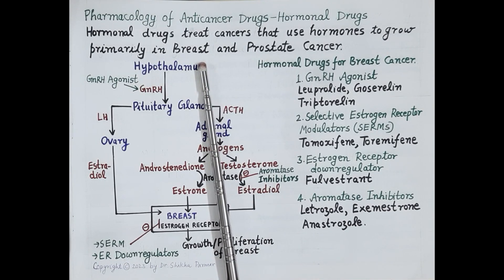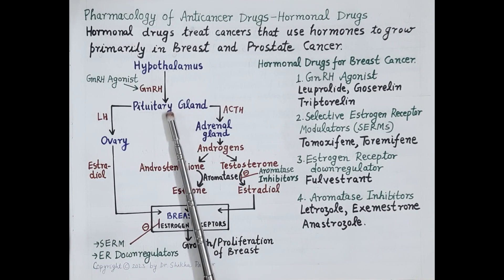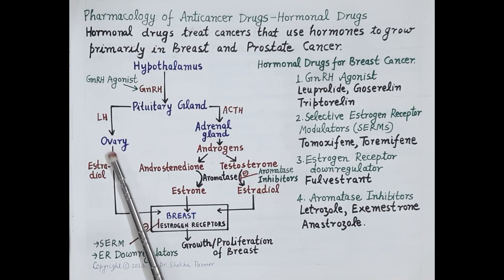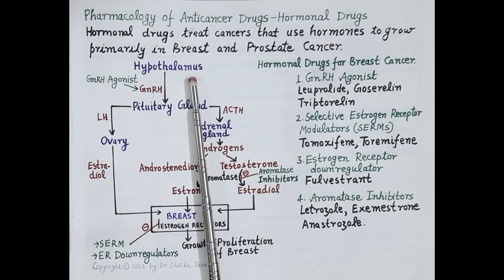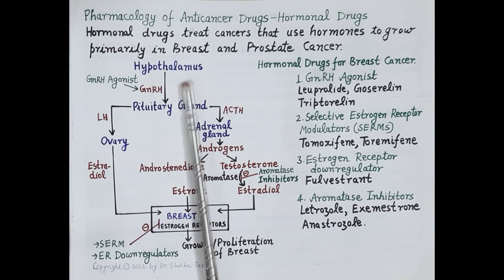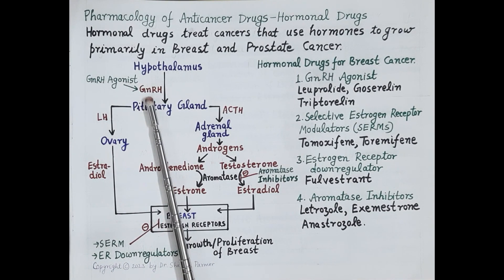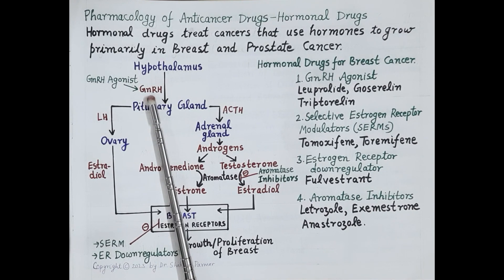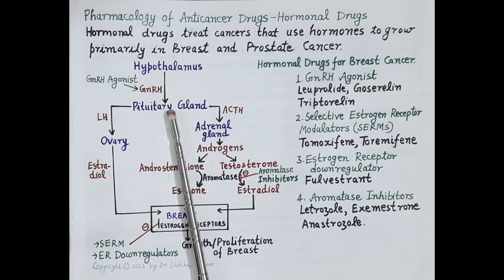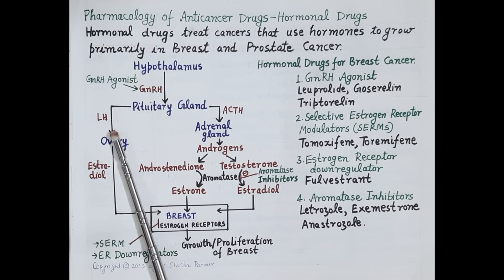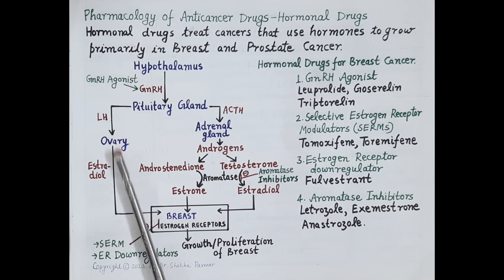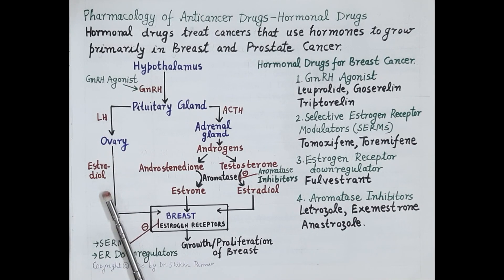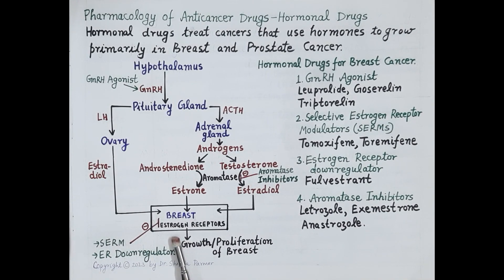Before studying pharmacology of hormonal drugs for breast cancer, it is essential to understand the hypothalamo-pituitary-ovarian axis. The hypothalamus is located in the brain and it secretes gonadotropin-releasing hormone, or GnRH, also known as luteinizing hormone releasing hormone. GnRH stimulates the anterior pituitary to release LH, the luteinizing hormone.